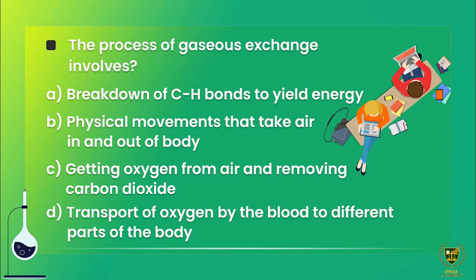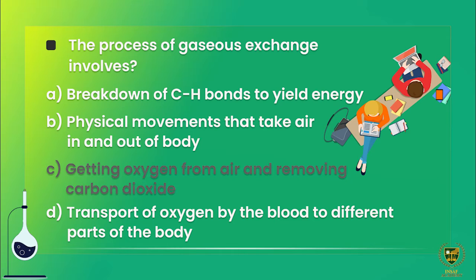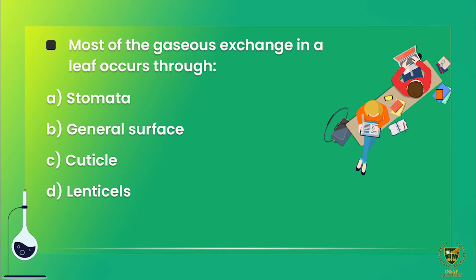Option C says getting oxygen from air and removing carbon dioxide. Hamara question tha process of gaseous exchange — gaseous exchange mein gaseous ka tabadala ho raha hai. Option D is transport of oxygen by the blood — that is a different topic. So the correct option is C: getting oxygen from air and removing carbon dioxide.